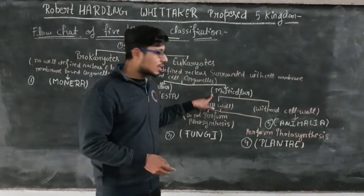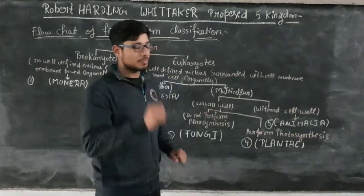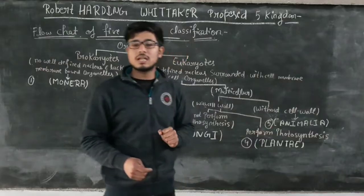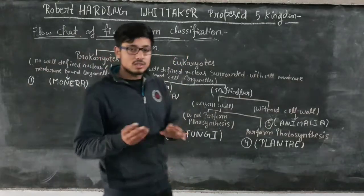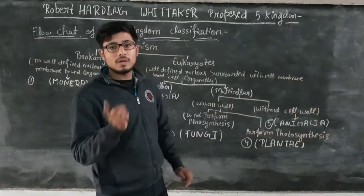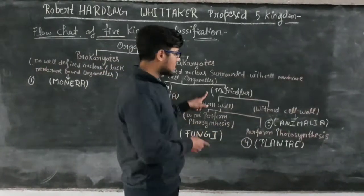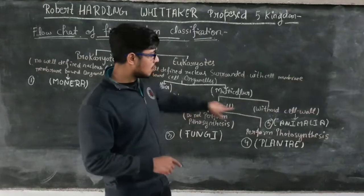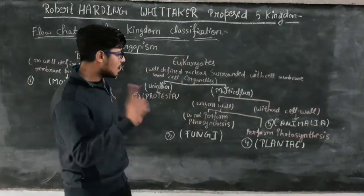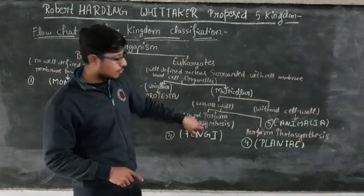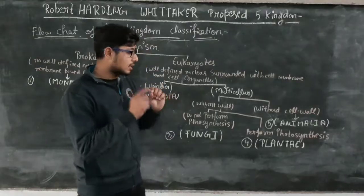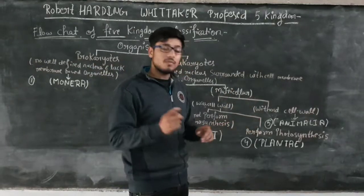The Multicellular Organism is further divided into two sub-categories: those with cell wall and those without cell wall. Those with cell wall perform photosynthesis, and those without cell wall do not perform photosynthesis. So there are two parts — those that do not perform photosynthesis and those that do perform photosynthesis.